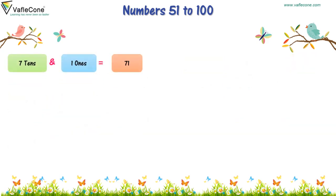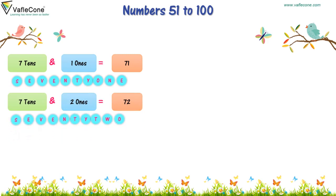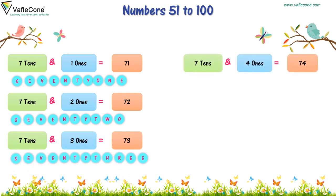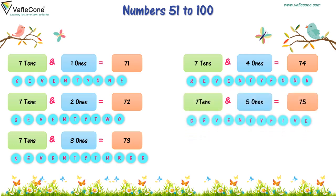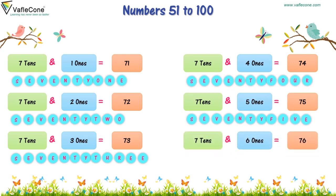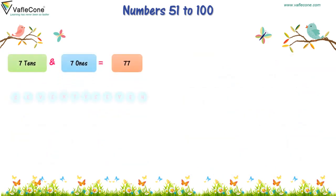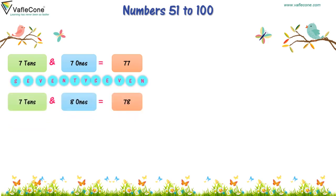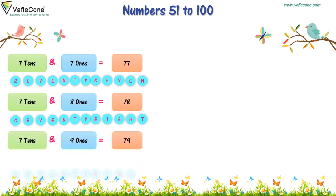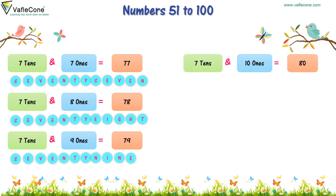7 tens and 1 one is equal to 71. 7 tens and 2 ones is equal to 72. 7 tens and 3 ones is equal to 73. 7 tens and 4 ones is equal to 74. 7 tens and 5 ones is equal to 75. 7 tens and 6 ones is equal to 76. 7 tens and 7 ones is equal to 77. 7 tens and 8 ones is equal to 78. 7 tens and 9 ones is equal to 79. 7 tens and 10 ones is equal to 80, or 8 tens is equal to 80.